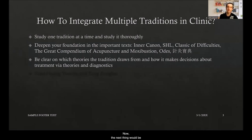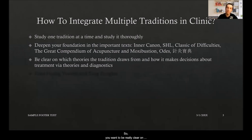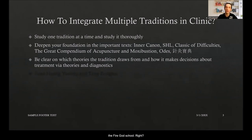When looking at any one tradition, focus first on their foundational theory — how are they building up their theoretical framework — and then importantly, how they connect that to clinic. That means seeing how they make treatment decisions via their theories and their specific diagnostics. For instance, in the Huo Shen Pai, or Fire God School, you'd want to understand both their theory of supplementing yang and their pulse system, because without both you don't really know that school.